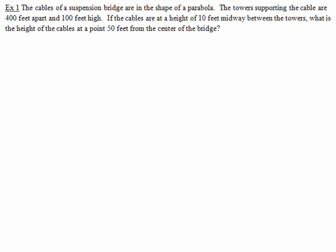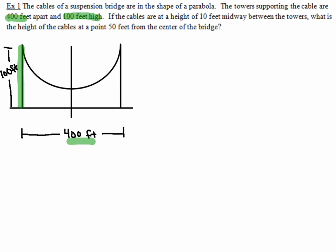So first thing we're going to do is put it together in a picture. Now, the first thing that I want to key on is the very first sentence that has numbers in it. The towers supporting the cables are 400 feet apart and 100 feet high. Now, the 400 feet apart is not a bad idea, but don't forget, if we split that in half, because it's going to be centered at the origin, if we split that in half, then that's going to have a length of 200.